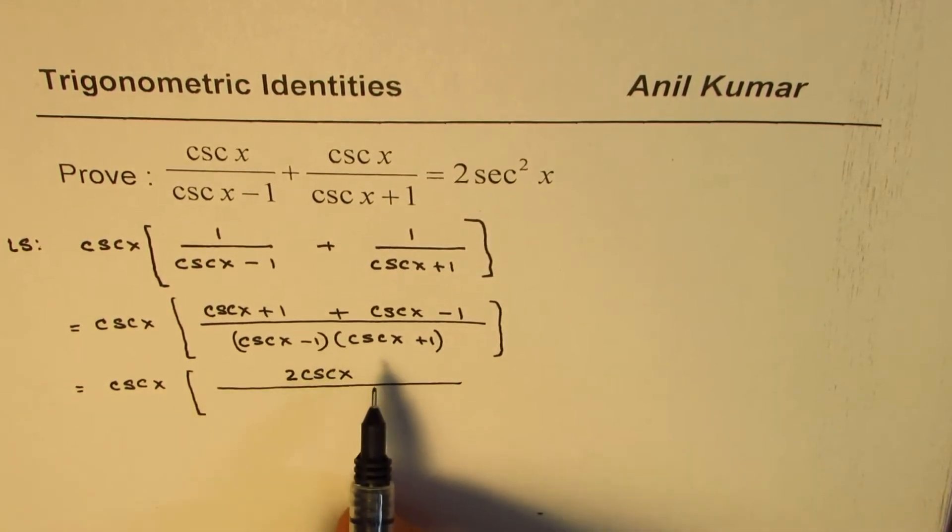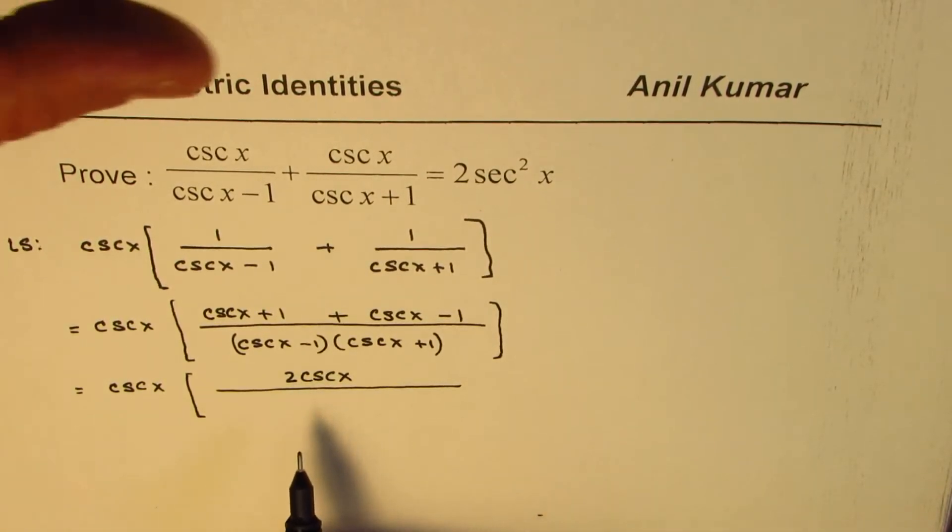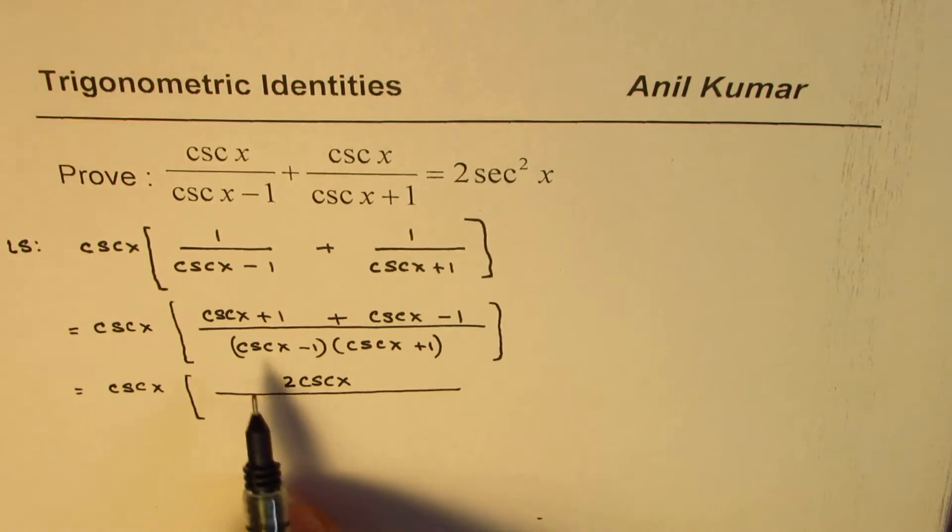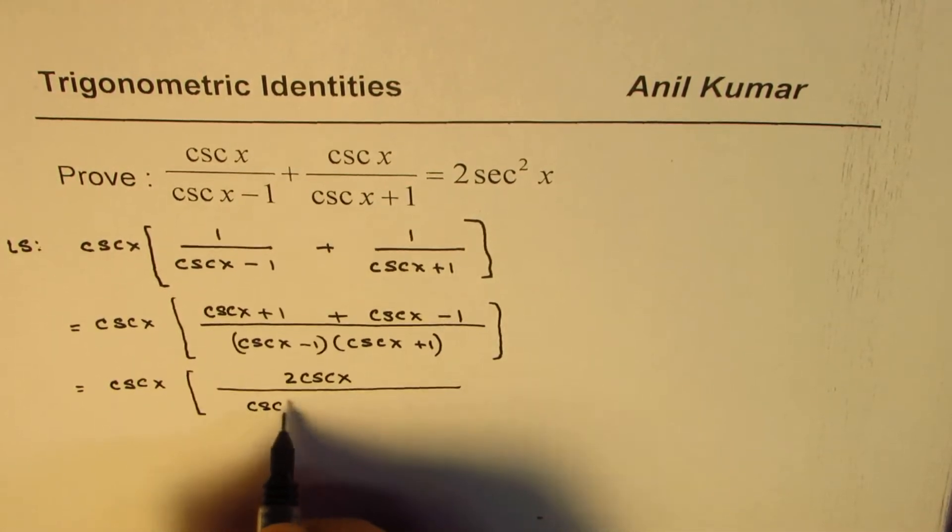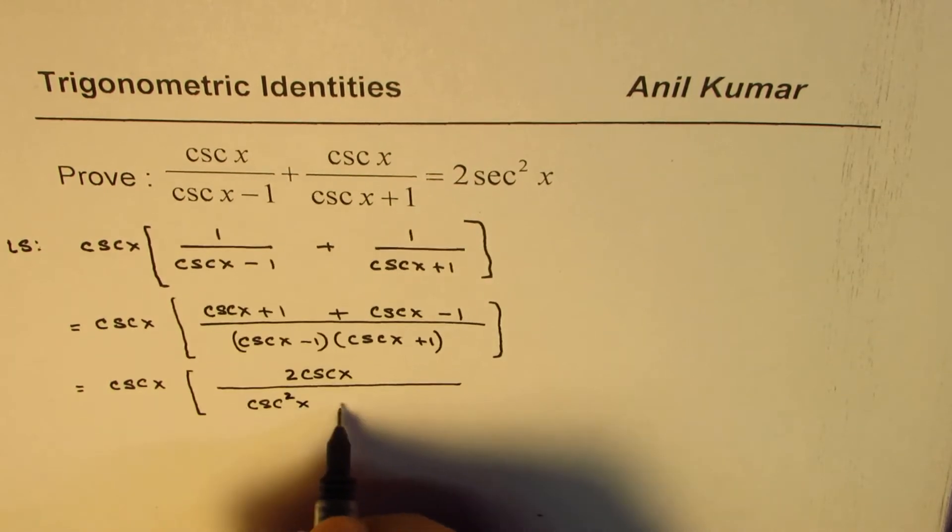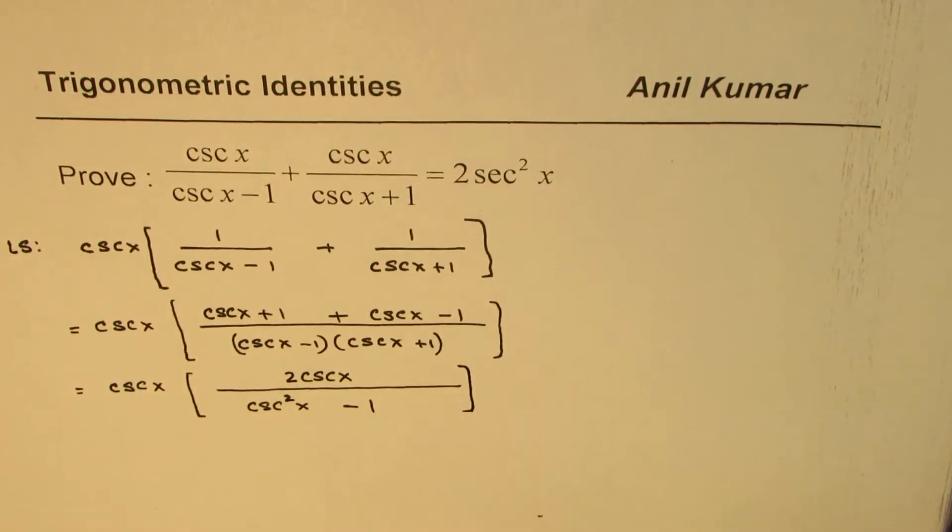In the denominator, we are multiplying sum and difference. So, we get square, difference of squares. What we get here is cosecant square x minus 1. So, that is what we get in the denominator.